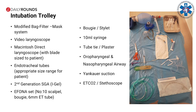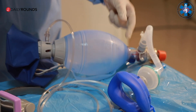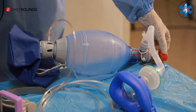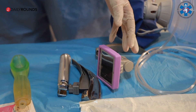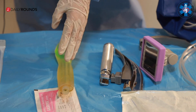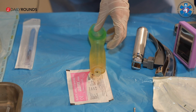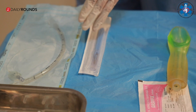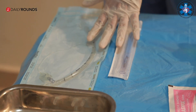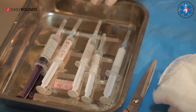We have a modified bag and mask device with viral filters, catheter mount, and PEEP valve attached to it. We plan for video laryngoscopy-assisted intubation initially. If we fail, we can go for a second-generation supraglottic airway device with an i-gel. Or, if we encounter a can't intubate, can't ventilate situation, we can go for front of neck access. All necessary drugs are drawn and loaded in syringes.